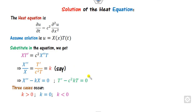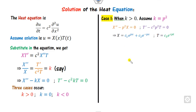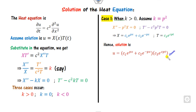We obtain ordinary differential equations. There is an unknown parameter k, and we consider three cases: k positive, k equal to zero, or k less than zero. When k is positive, we set k equal to p squared and substitute. The auxiliary equation gives m squared minus p squared equals zero, so m equals plus or minus p. We can write the solution for X and for T, and substituting X and T gives the solution of the differential equation.